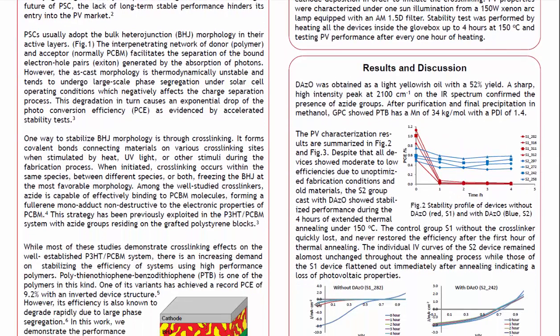Polymer solar cells usually adopt the bulk heterojunction morphology in their active layers. The interpenetrating network of donor and acceptor facilitates the separation of the bound electron-hole pairs generated by the absorption of photons. However, this morphology is thermodynamically unstable and tends to undergo large-scale phase segregation under photocell operating conditions, which negatively affects the charge separation process. Its degradation in turn causes an exponential drop of the photoconversion efficiency, as evidenced by accelerated stability tests.